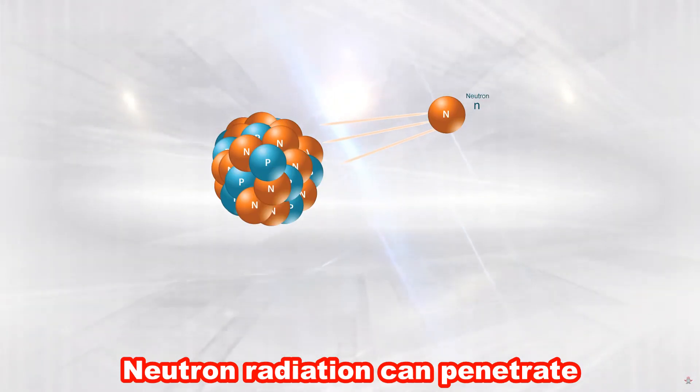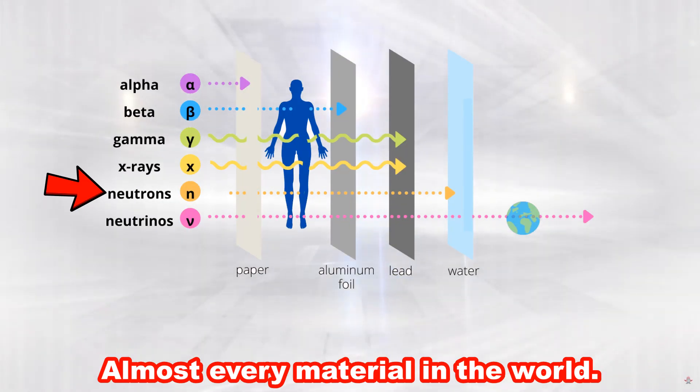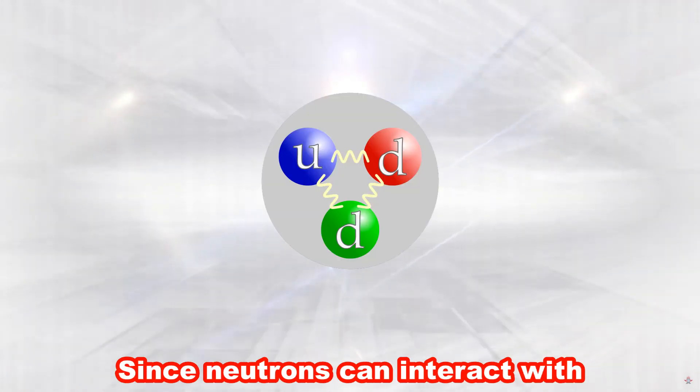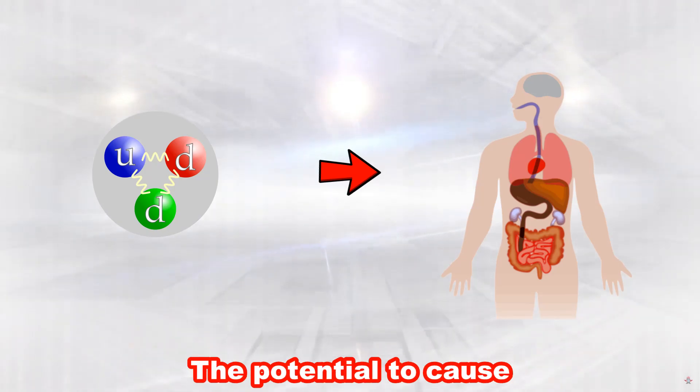Neutron radiation can penetrate almost every material in the world. This makes it also dangerous. Since neutrons can interact with tissues in the body and have the potential to cause damage.